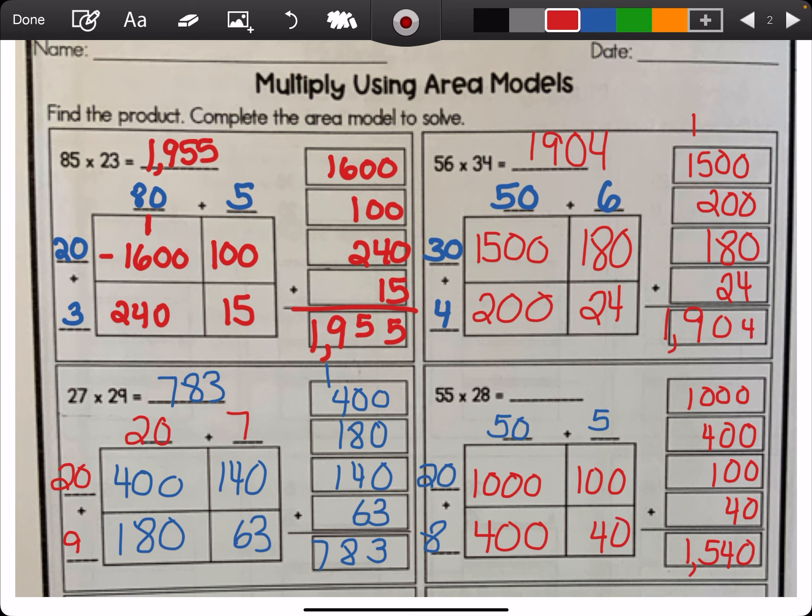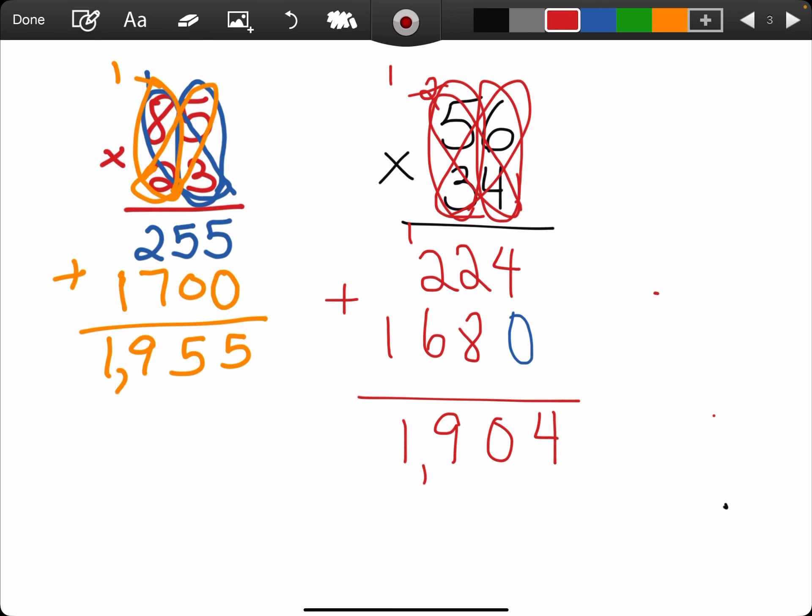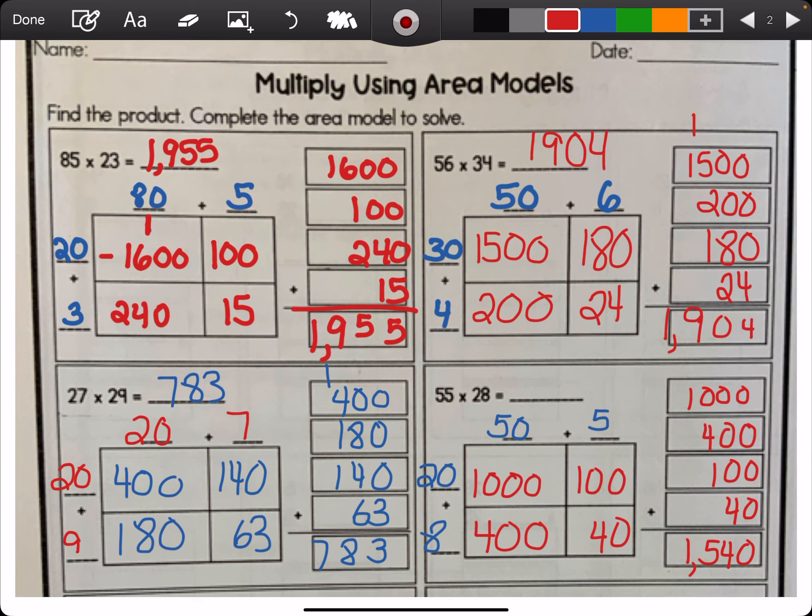So, this is just going over how we use the area model. You could practice with any. Have your parents give you any 2 by 2 digit number. Doesn't matter what they give you. You could use the area model, or you can use standard algorithm. Either method is completely fine.